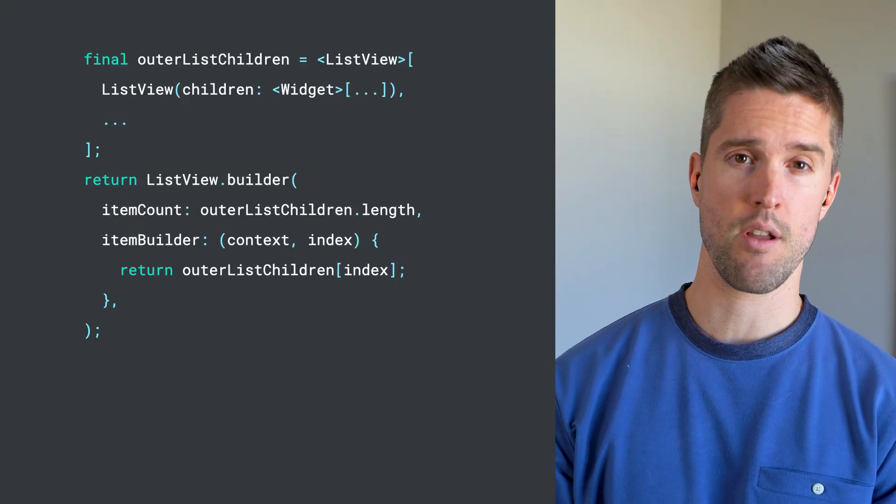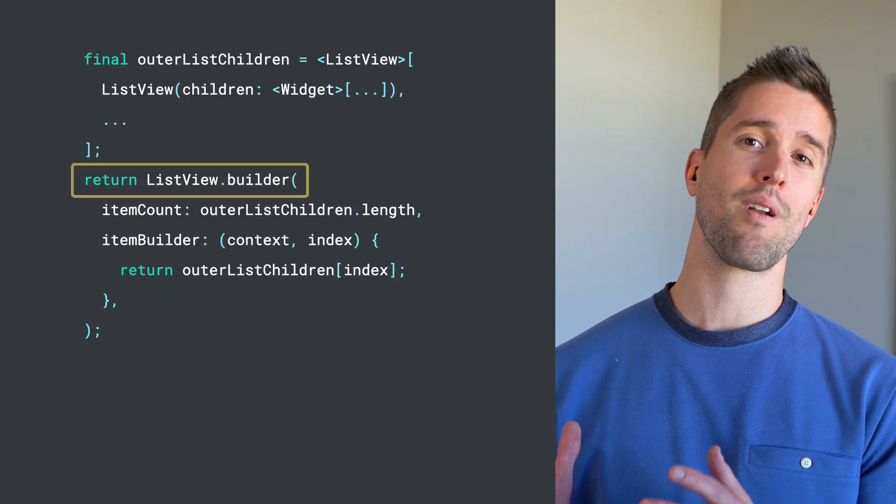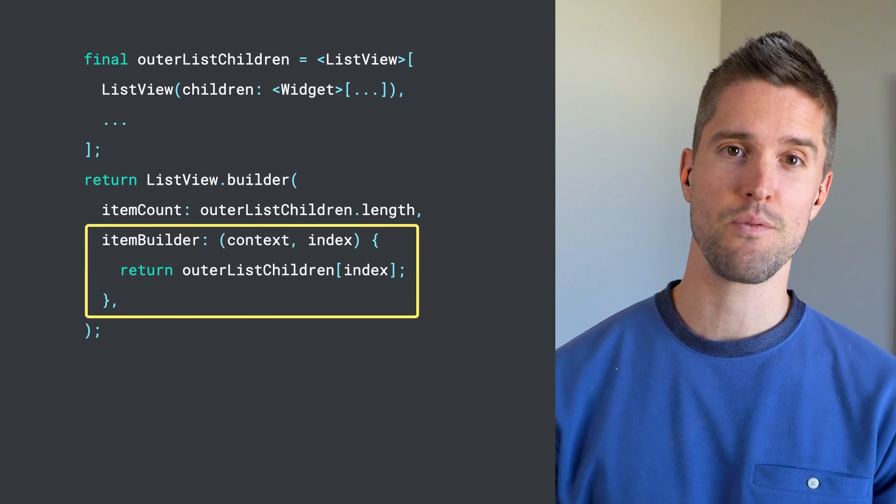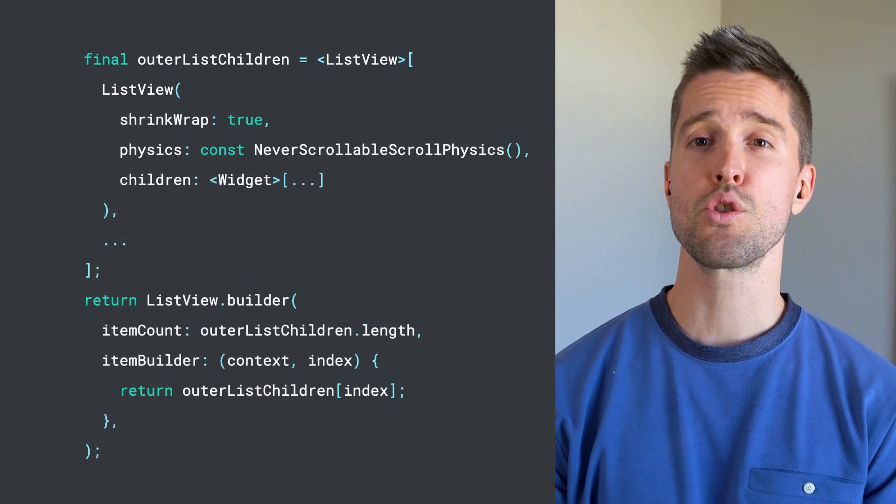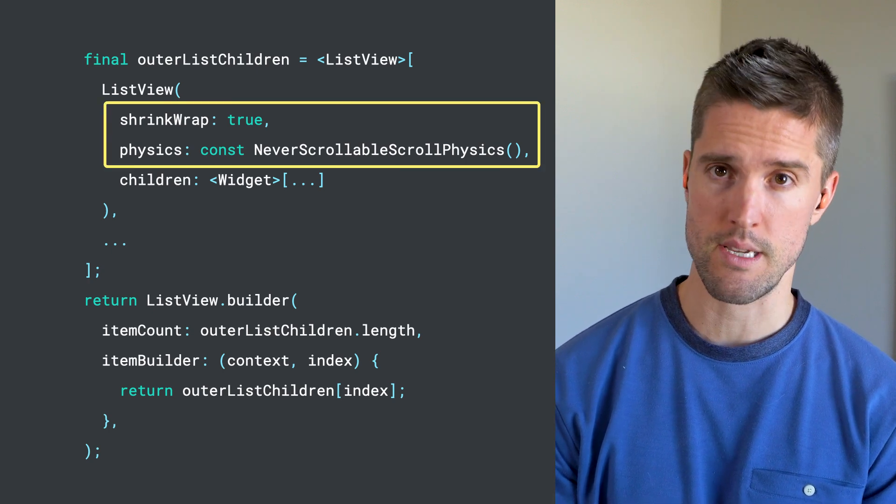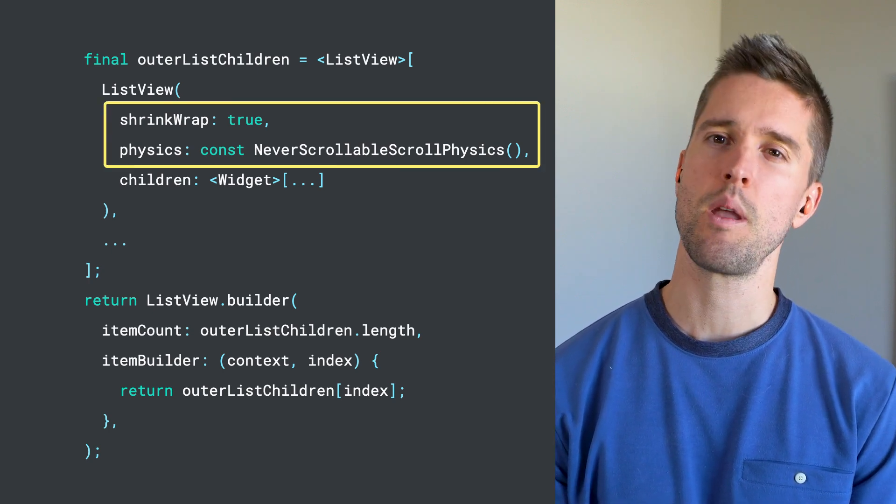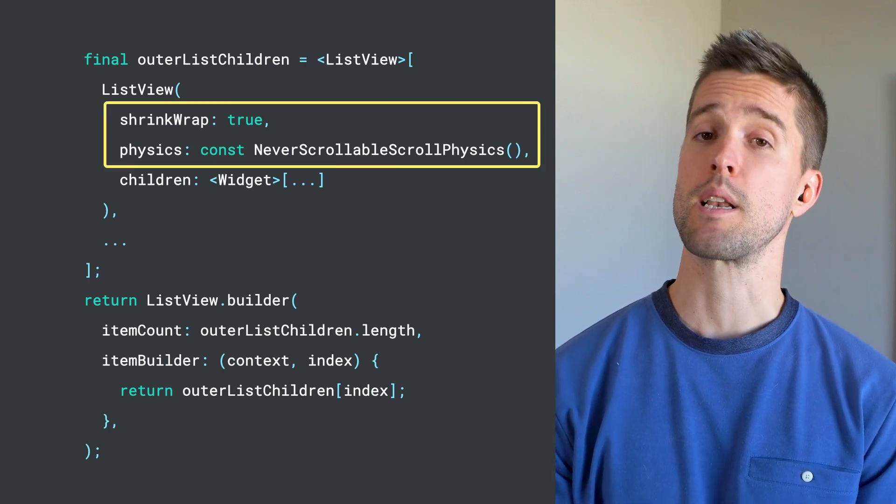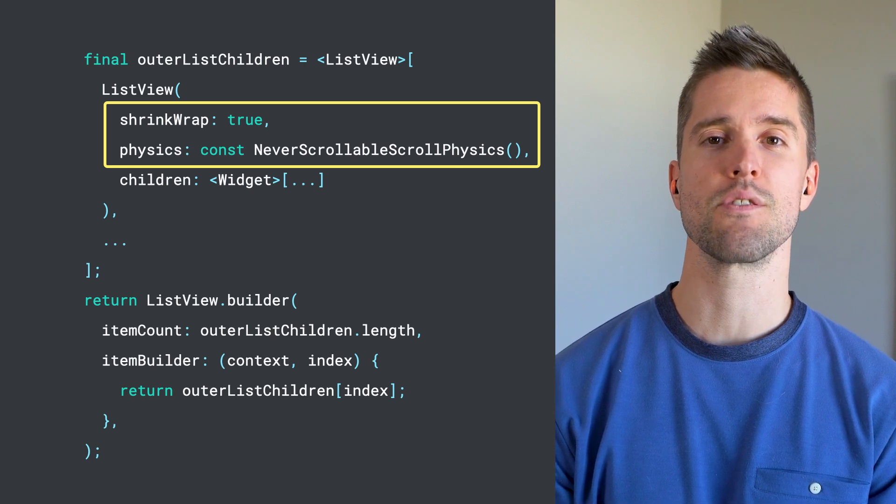The bigger your inner lists are, the more important the following change is. Let's look at some code. Imagine you have this scenario: a list view comprised entirely of list views. If you set shrinkwrap to true on each inner list and set never scrollable scroll physics, Flutter will technically be able to render your UI, but remember that danger still lurks.